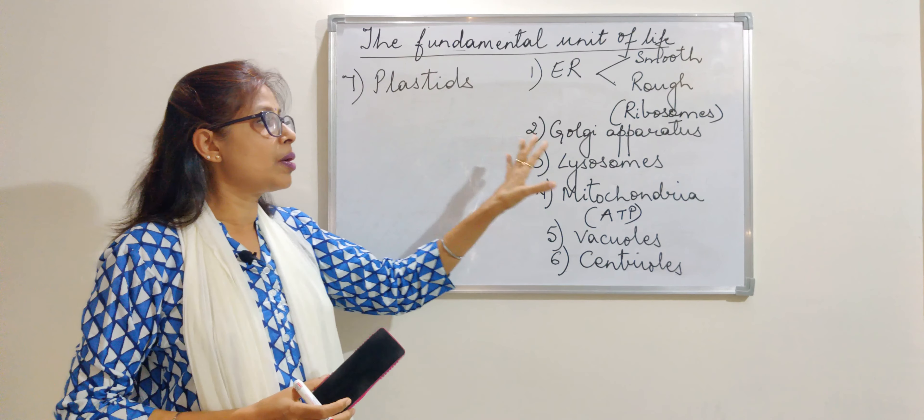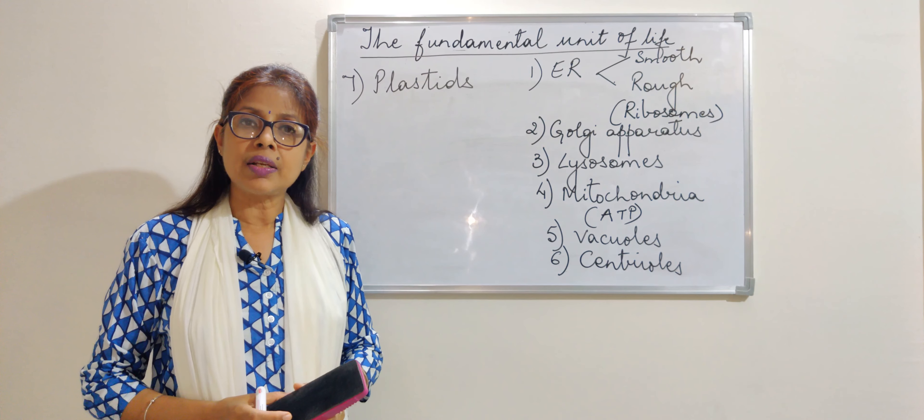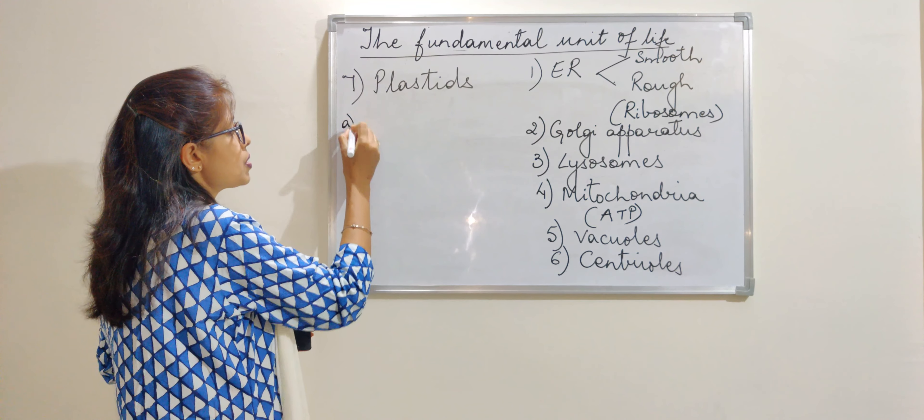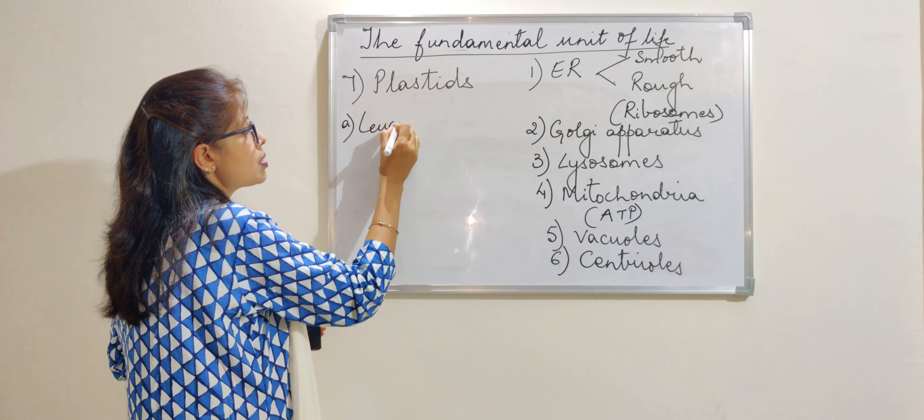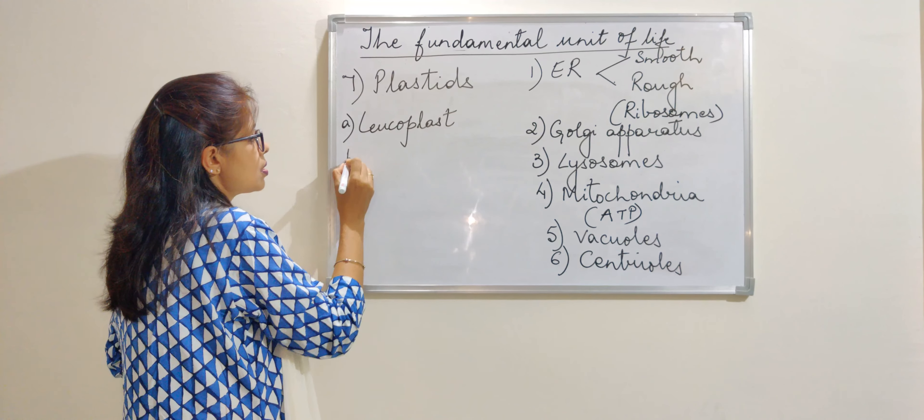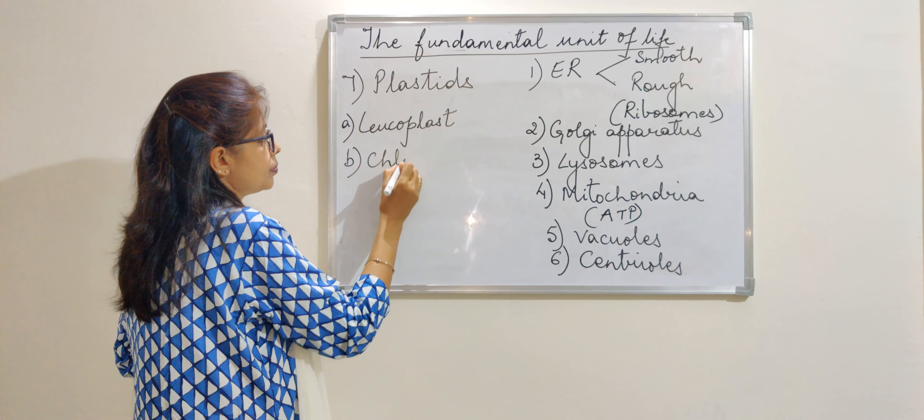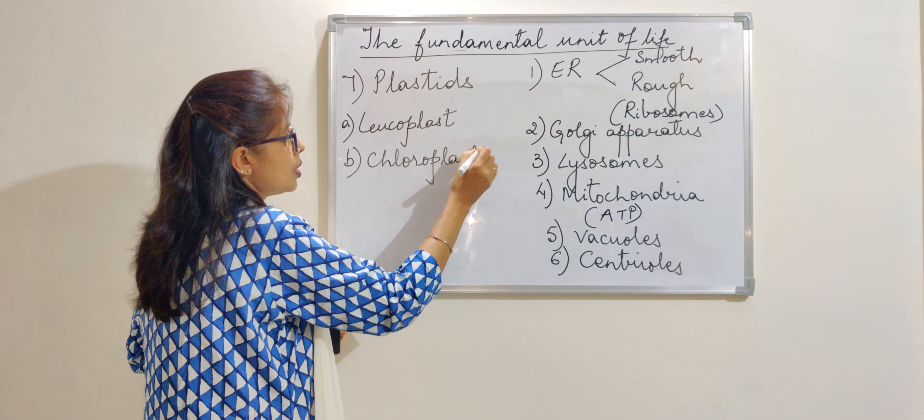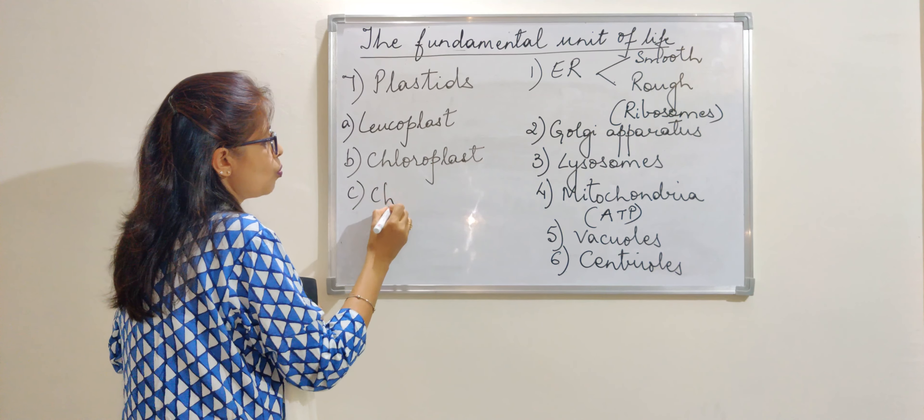The plastids are present only in plant cell. We do not find them in any animal cell. They are of three types: the leukoplast, then the chloroplast, and the chromoplast.